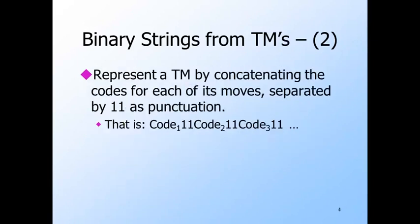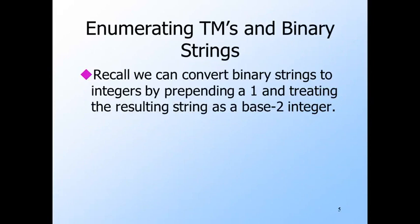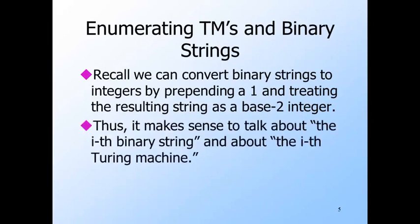We then represent an entire Turing machine by all its rules concatenated and separated by pairs of ones. Once we have Turing machines represented by binary strings, we can convert these strings to unique integers using the trick we explained a while ago: put a one in front of a binary string and treat the result as a binary integer. Thus we can talk about the i-th Turing machine, and of course we can also talk about the i-th binary string.